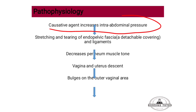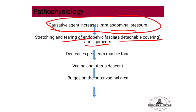Causative agents include pregnancy, which increases abdominal pressure, stretching and tearing the endopelvic fascia. The endopelvic fascia is a stretch and detachable covering and ligament structure. This leads to a decrease in perineal muscle tone, lowering the pelvic floor's ability to support the uterus.